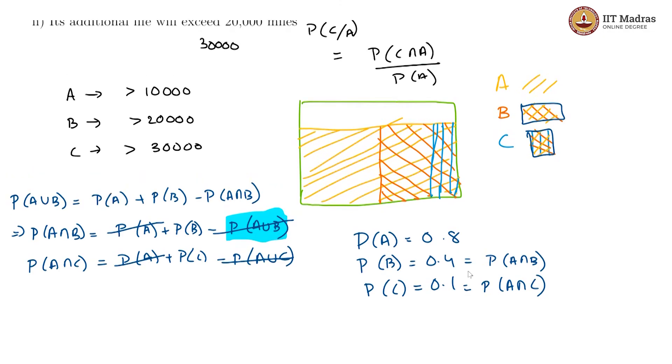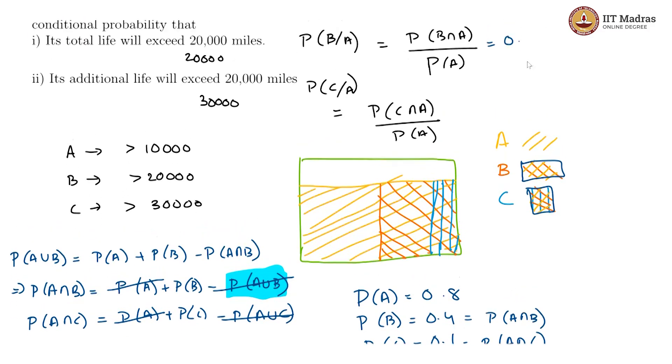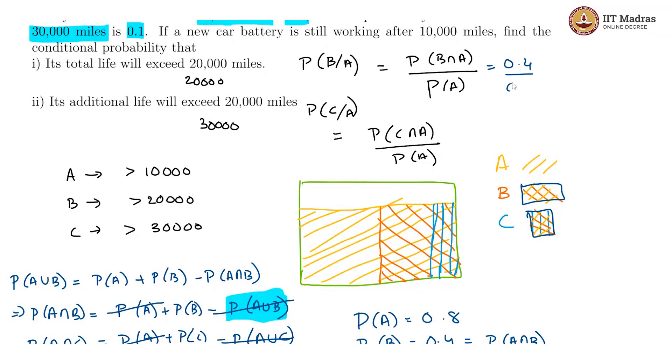And that gives us this equals 0.4 divided by 0.8 which is 0.5, and this would give us 0.1 divided by 0.8 which is 0.125. These are the probabilities we are looking for.